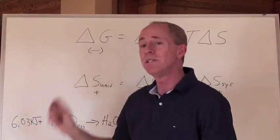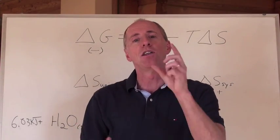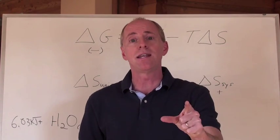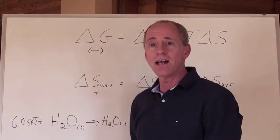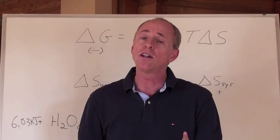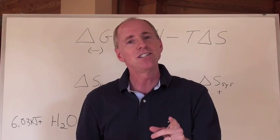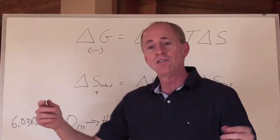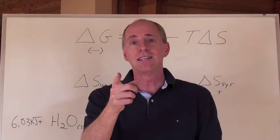As long as it's a negative, which means energy is released, then you've got a reaction that is spontaneous. Negative delta G value is a spontaneous reaction. A positive delta G value is non-spontaneous. A delta G value of zero means you've got a reaction that's at equilibrium.